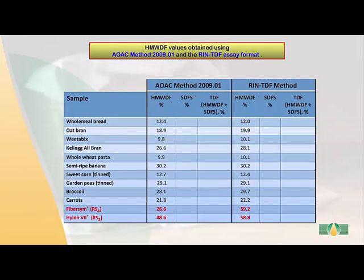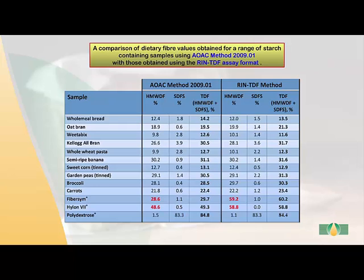The high molecular weight dietary fiber values obtained for a range of samples using AOAC method 2009.01 and the new rapid integrated total dietary fiber procedure are very similar. The two exceptions are FibreSim, an RS4 or phosphate cross-linked starch, and Hylon7, an RS2 starch. With the rapid integrated procedure, quite significantly higher values are obtained. For all other starch-containing samples analyzed, the high molecular weight dietary fiber value is very similar whichever method was used.